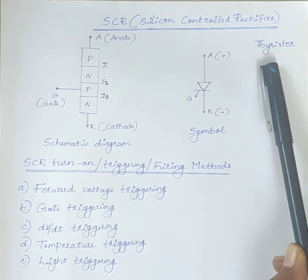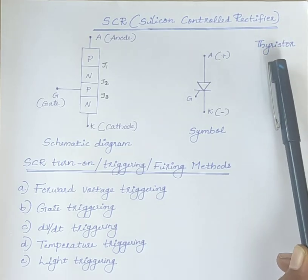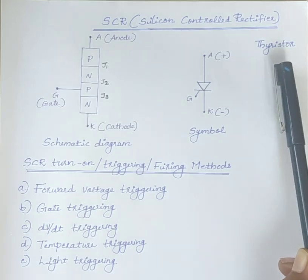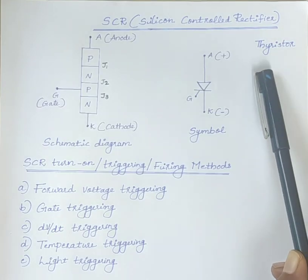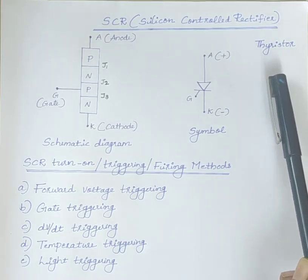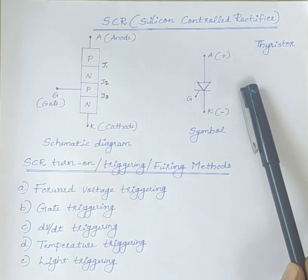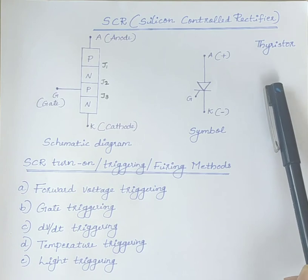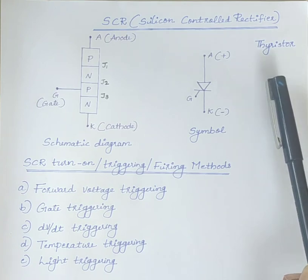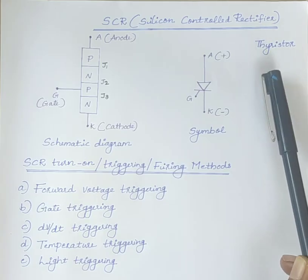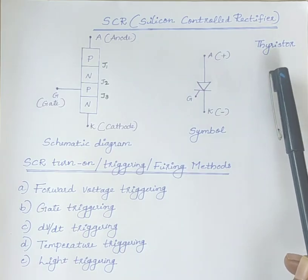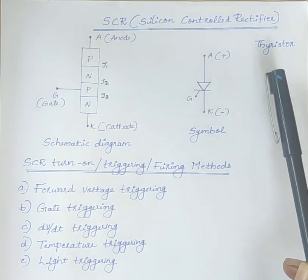Thyristor denotes a family of semiconductor devices used for power control in DC and AC systems. The other members under Thyristor family are GTO, TRIAC, DIAC, etc. Among this, SCR is the most widely used and popular member of the Thyristor family.